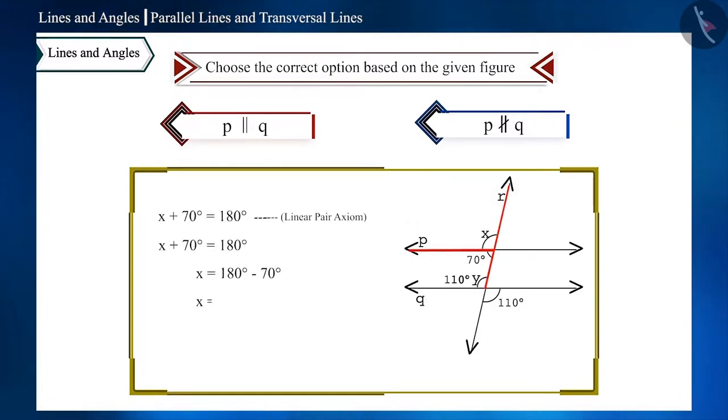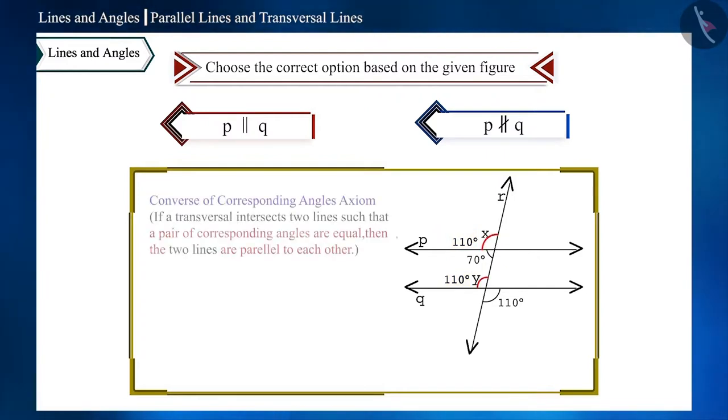We get the measure of x as 110 degrees. Be careful here, the measure of both x and y is the same. And using the converse of the corresponding angles axiom, we can say that these two lines are parallel. Therefore option one is correct.